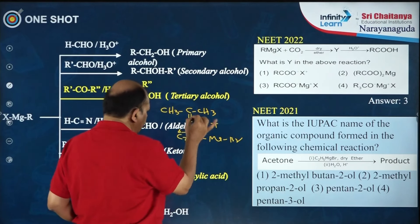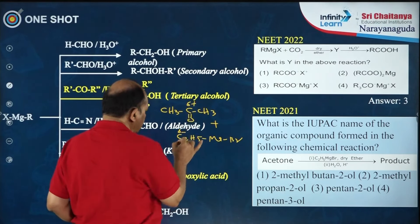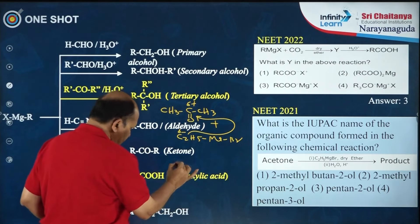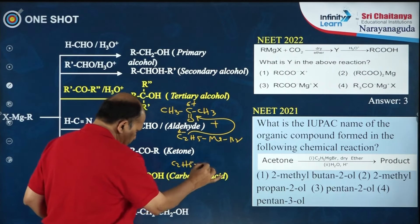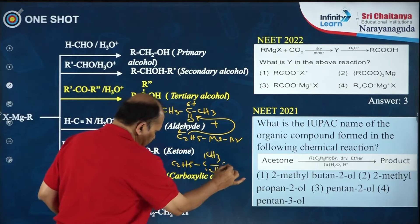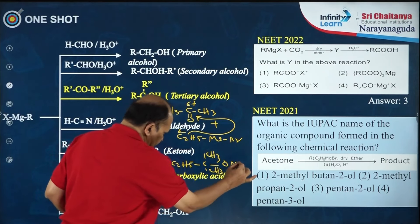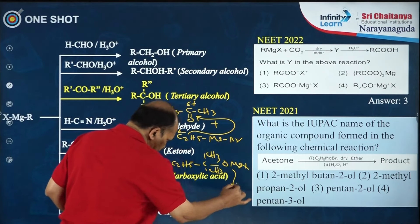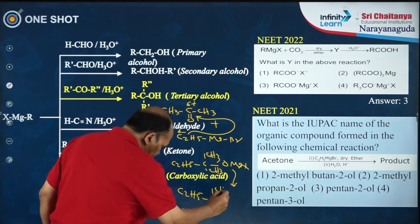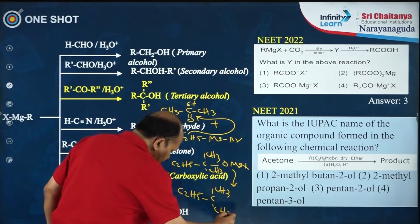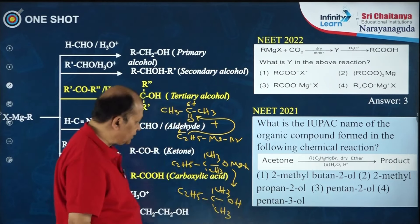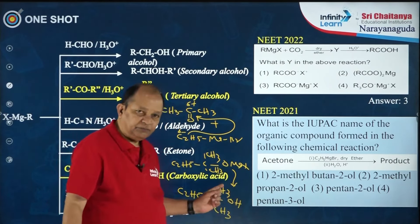Here, acetone is treated with ethylmagnesium bromide. The carbon of the carbonyl is delta positive; the carbanion of C2H5 attacks that carbon. So you are getting C2H5–C(CH3)2–OMgX as the intermediate. On hydrolysis, you get C2H5–C(CH3)2–OH. This is the compound.